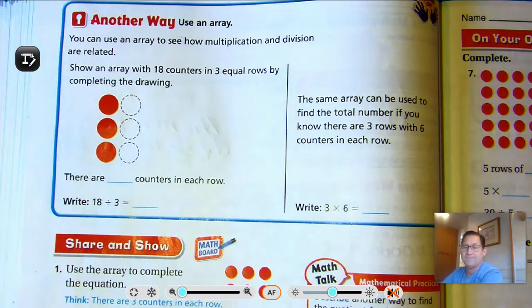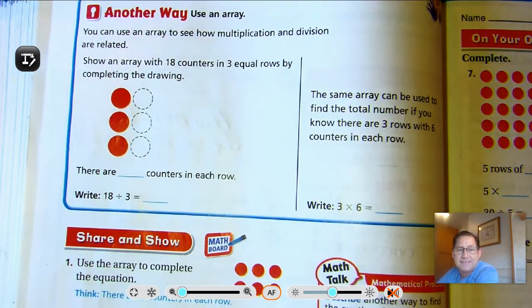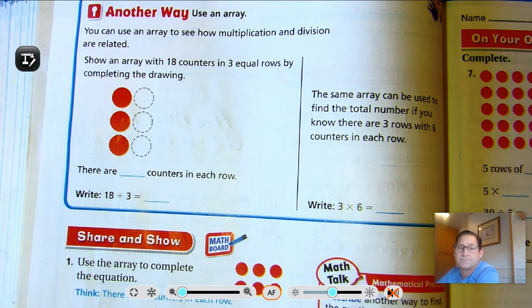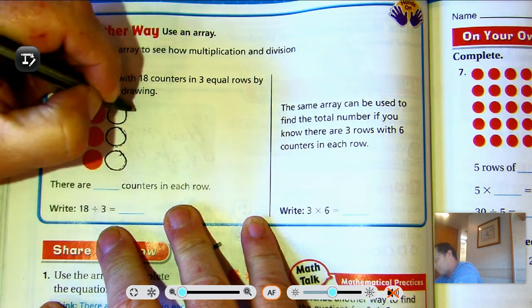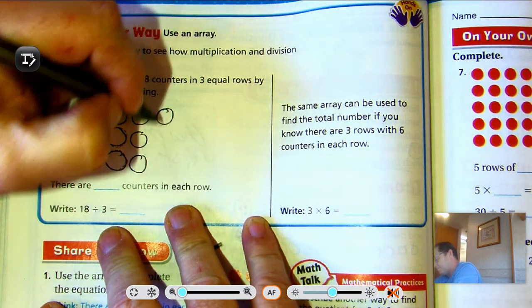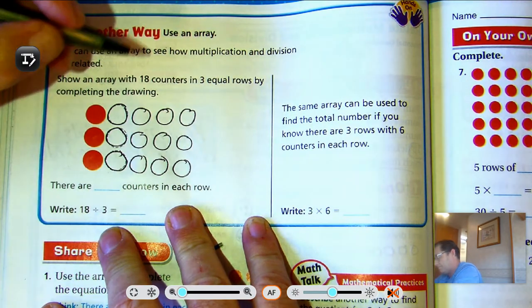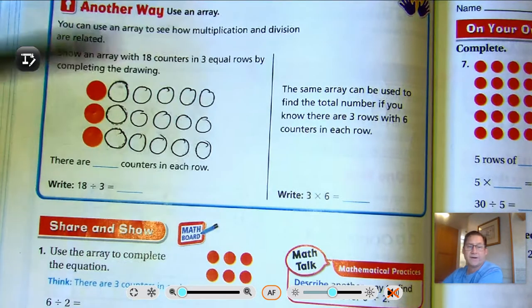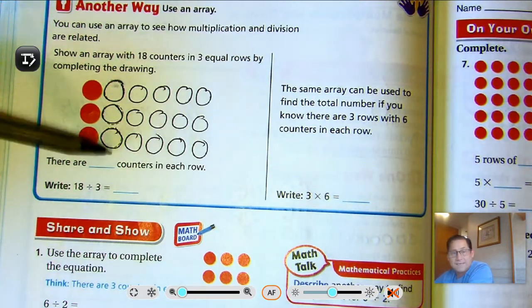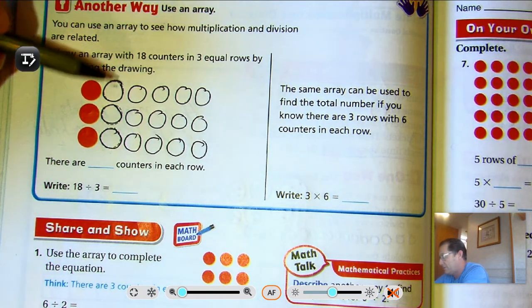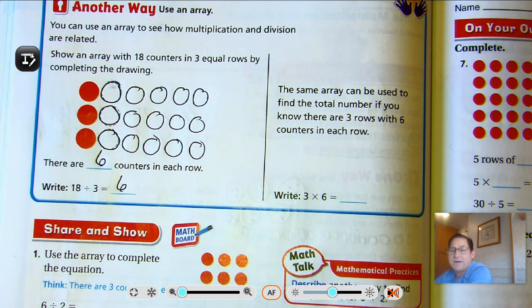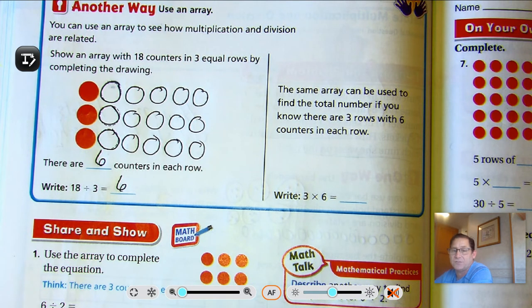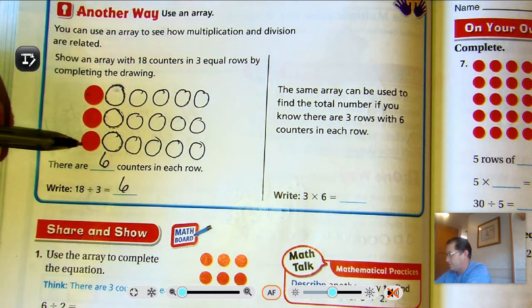So another way we could have solved this is to use an array like we've learned about. We had 18 counters and we have three equal rows. So if we have three rows, we keep adding one to each row until we used all 18. And we noticed that there are six counters in each row. So 18 divided by three is six. The same array can be used to find the total number if you know there are three rows with six counters in each row. Three rows, six counters in each row. That's the same thing as saying three times six.